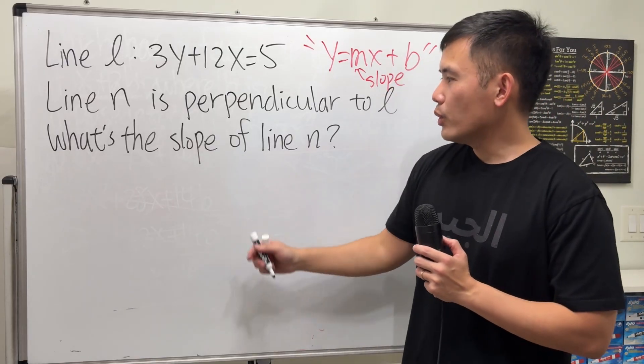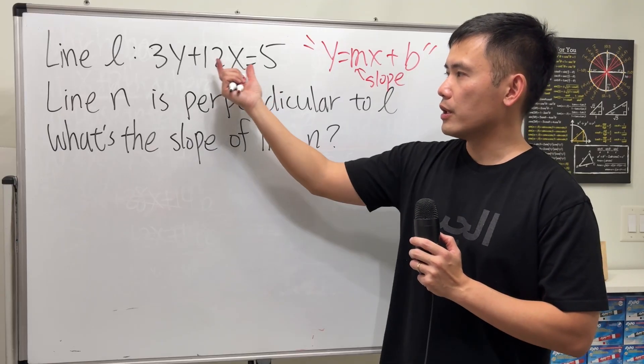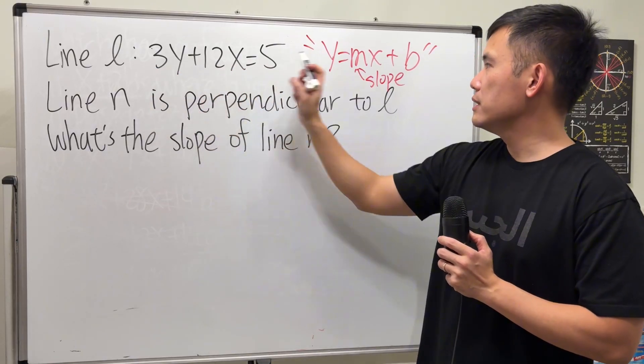So, in order to find out the slope of line N, which is perpendicular to L, we need to know the slope for L first. So, let me put this into that form first.